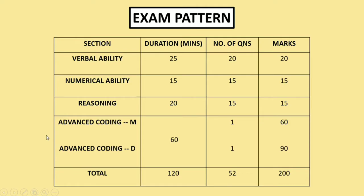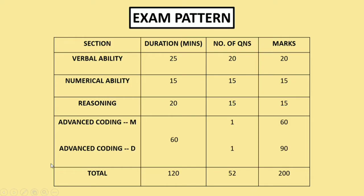For advanced coding, you will have one medium-level coding question and one difficult-level coding question. Don't think the medium-level coding is similar to the 15-mark IPA coding — it's not. Both use the same coding concepts, but the medium level covers fewer concepts. The difficult level covers more concepts, which is why it carries 90 marks and the medium level carries 60 marks.